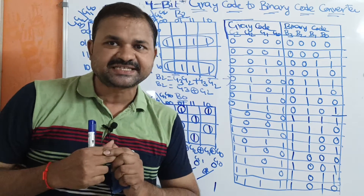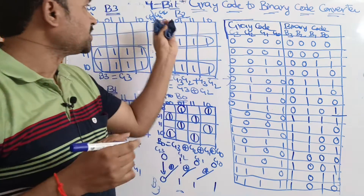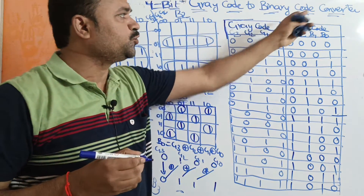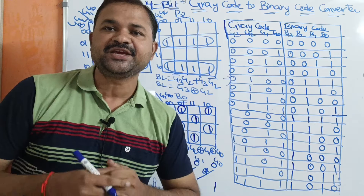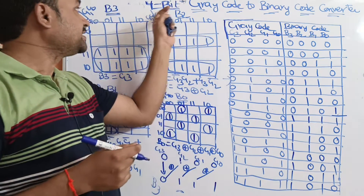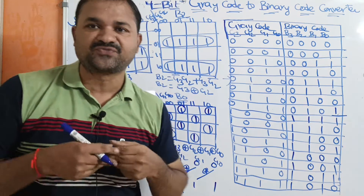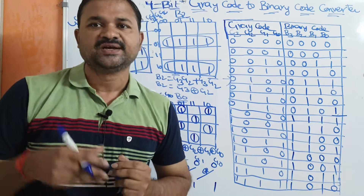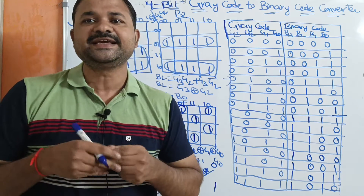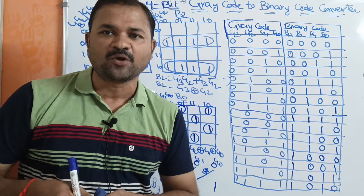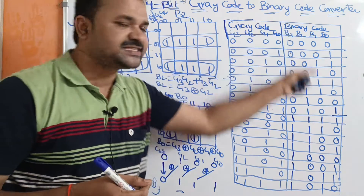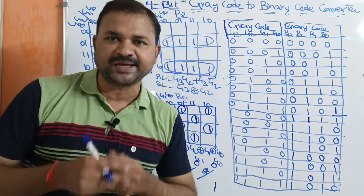Now let us discuss about a 4-bit grey code to binary code converter. The number has 4 bits, so totally we will get 2 to the power 4, that is 16 combinations. First let us see the truth table.